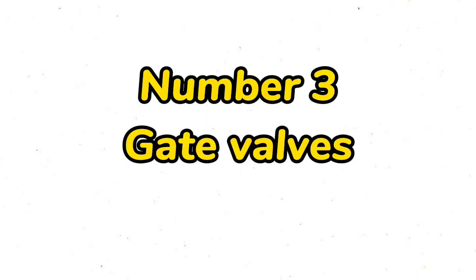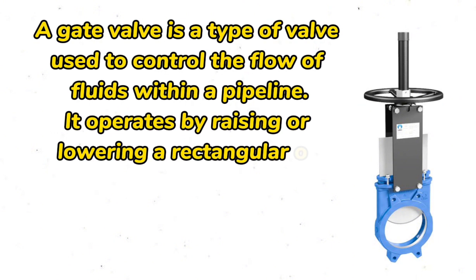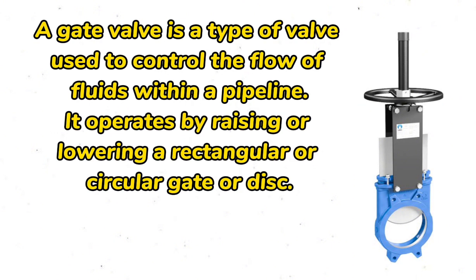Number three: gate valves. Gate valves are best used as isolating or stop valves where you want full flow or no flow. When they're fully opened, the fluid will flow in a straight line. A gate valve is a type of valve used to control the flow of fluids within a pipeline.